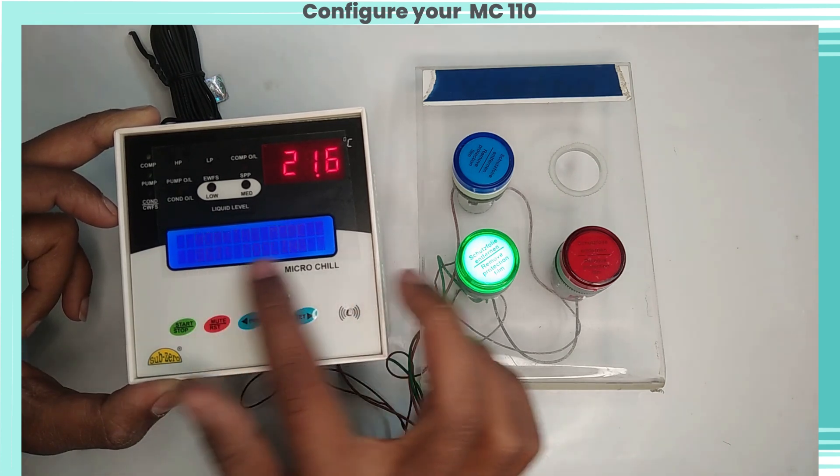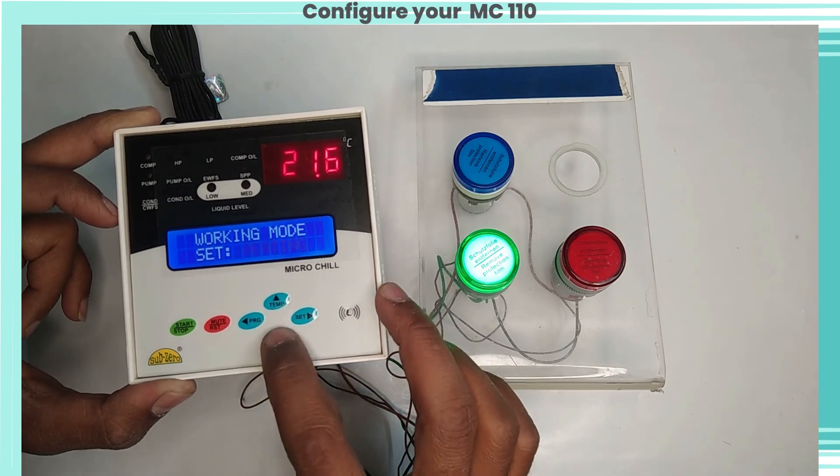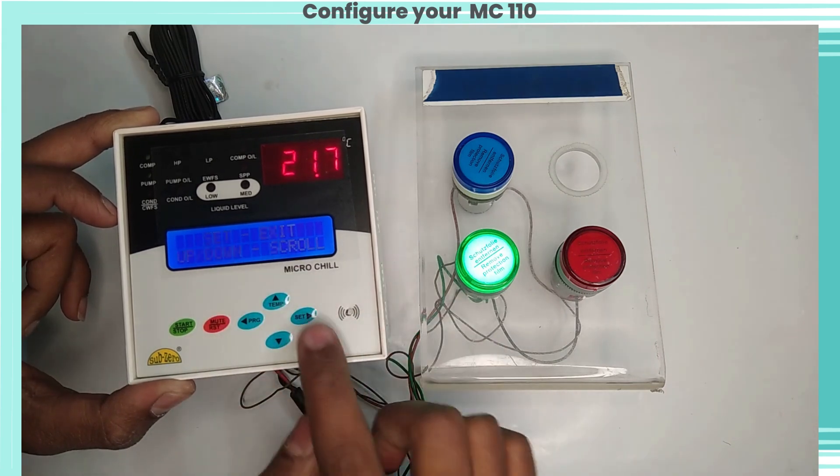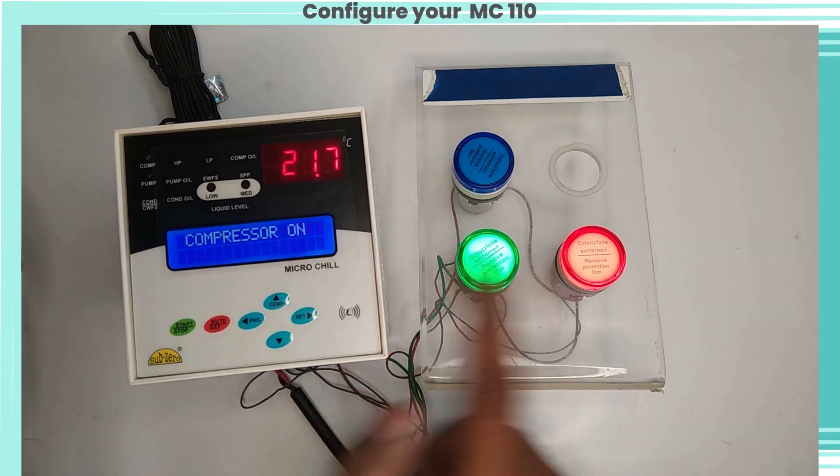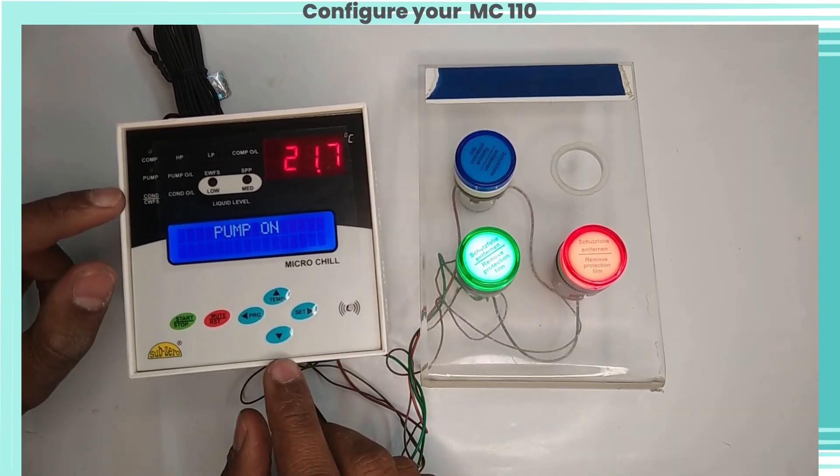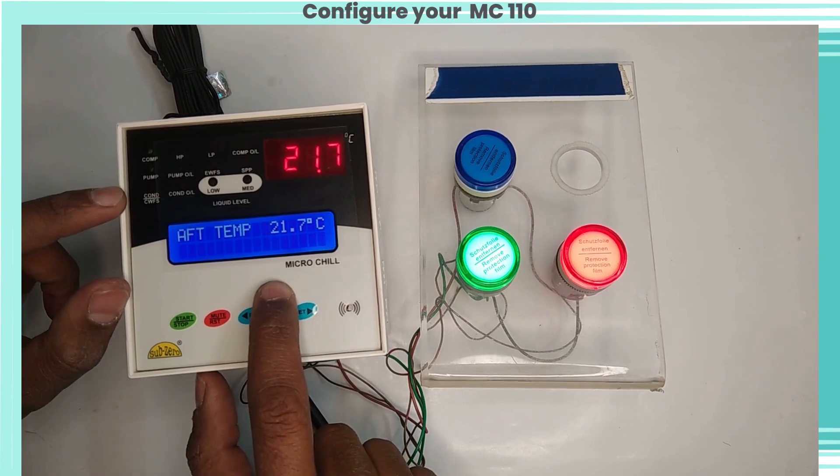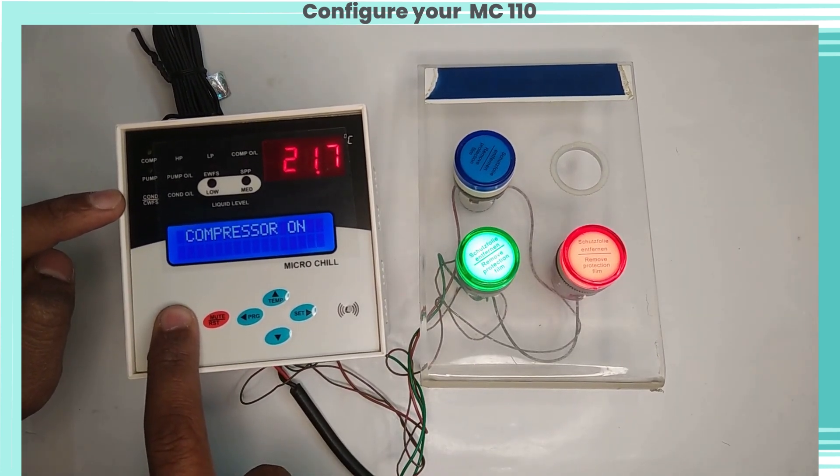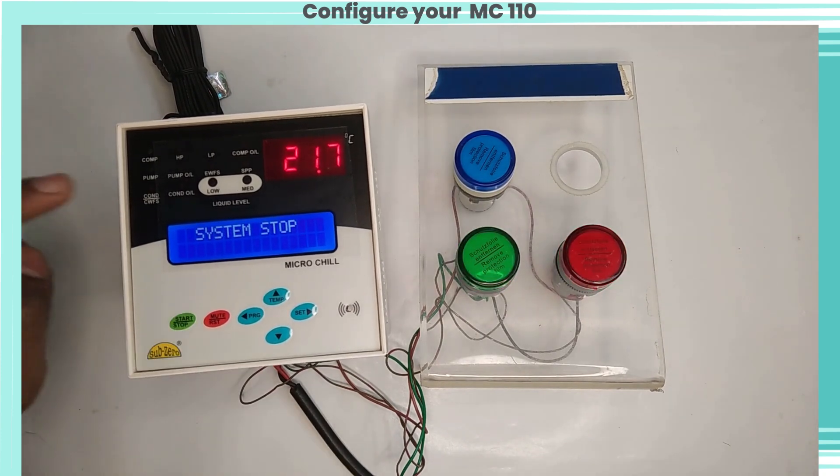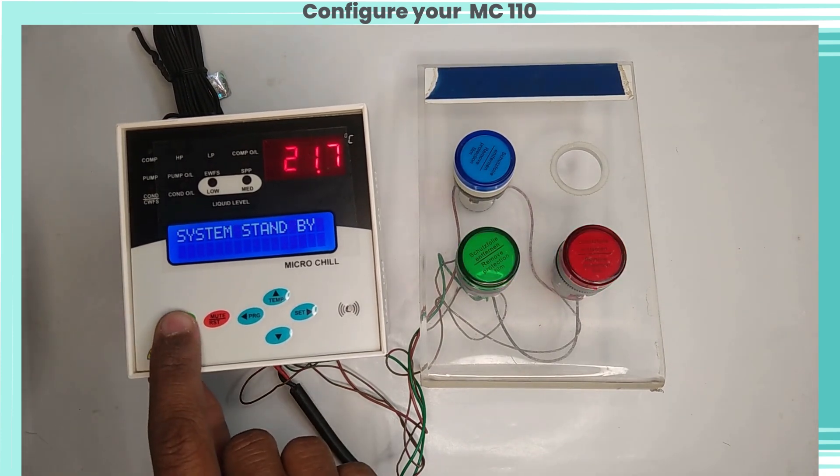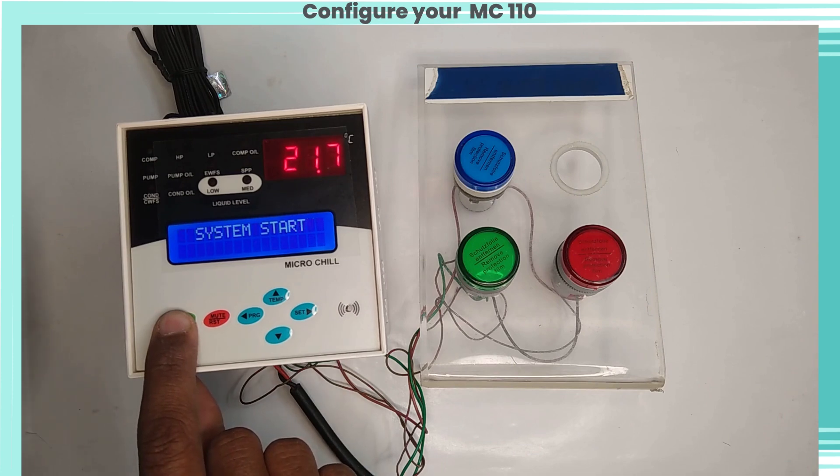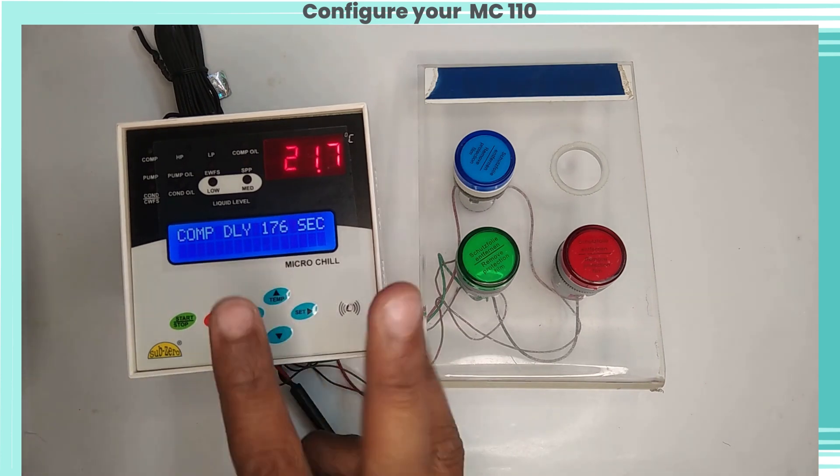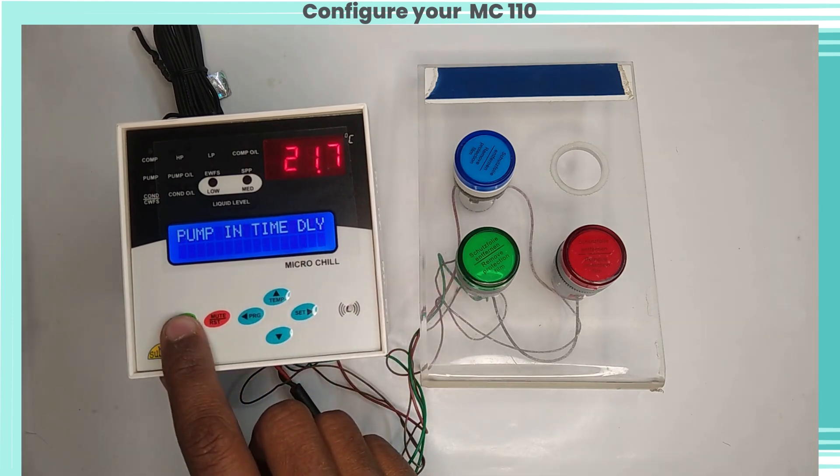Now the controller is working in cooling mode and chiller set temperature is 10 degrees Celsius. Current temperature is 21.7 degrees Celsius, so compressor relay will be on. Here we can see compressor red LED is on. Now we'll stop the system by pressing stop button for two seconds. By pressing again for two seconds, we can start the system. Here, by default, compressor delay time is 170 seconds, so compressor will turn on after 170 seconds. Pump delay time is around 20 seconds, so we can see pump relay is on - the green LED is on. Here we can see different types of fault logs are available.